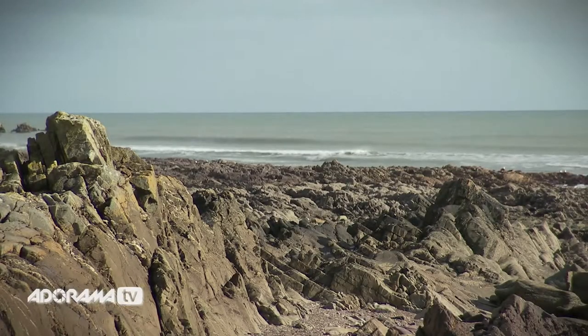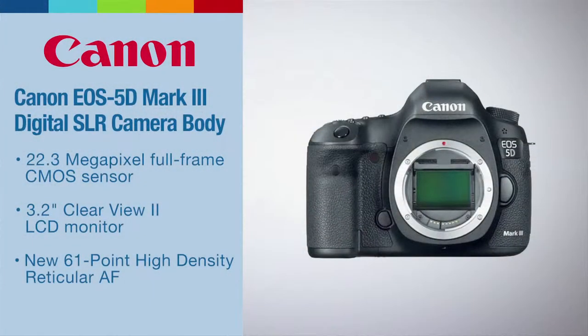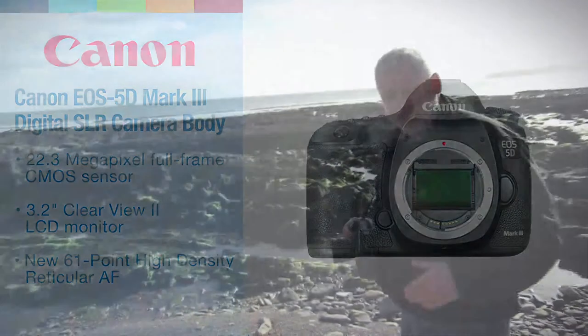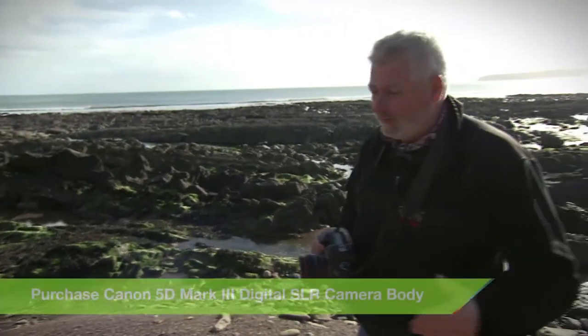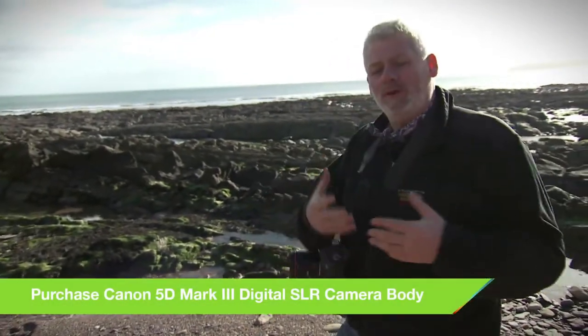So we're on this beach here and it's got this great geology behind us, nice leading lines into the picture. So we're going to see if we can get a shot here. Now there's a few components to what makes a good black and white image, and one of the first things you have to think about is foreground interest. You want something in the foreground to grab your viewer's eye.